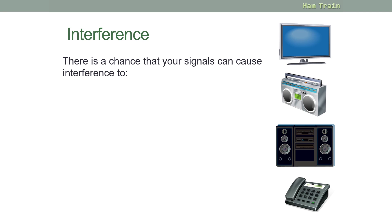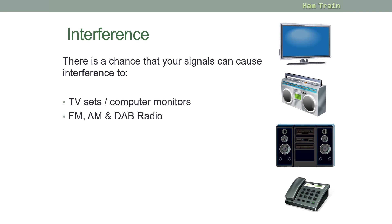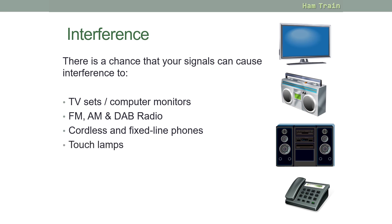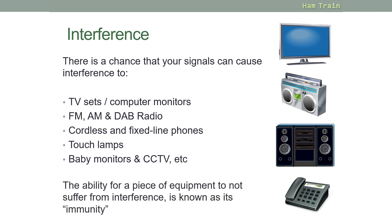As a radio amateur, there is a chance that your radio signals could cause interference to all sorts of devices, such as TV sets and computer monitors, FM, AM and digital radio, cordless and fixed landline phones, things like touch lamps, baby monitors, and closed circuit TV systems. The ability for a piece of equipment not to suffer from interference is known as its immunity, and some equipment is more immune to radio signals than others.